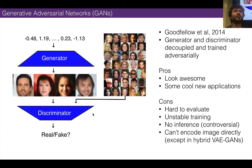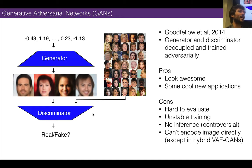The generator is trying to fool the discriminator; the discriminator is trying to catch the generator. Another analogy you'll hear is that the generator is a counterfeiter and the discriminator is the counterfeit police. Or: art appraiser and artist.